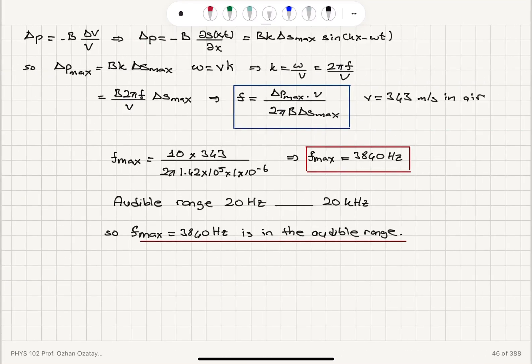So the displacement and pressure are related as delta P equals minus bulk modulus del S del X, the partial derivative. So maximum pressure is related to maximum displacement by B K times maximum displacement. So we can substitute for K, 2 pi F over V.